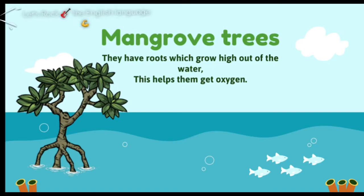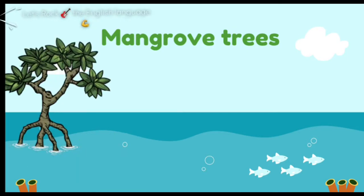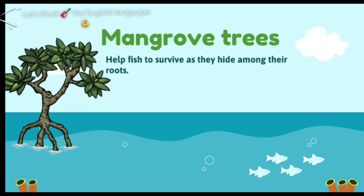The mangrove trees also have roots which grow high out of the water to help them get oxygen, as you see here. These roots also help the fish to hide among them from the larger fish, so it helps the fish to survive. They help the fish to survive as they hide between the roots.